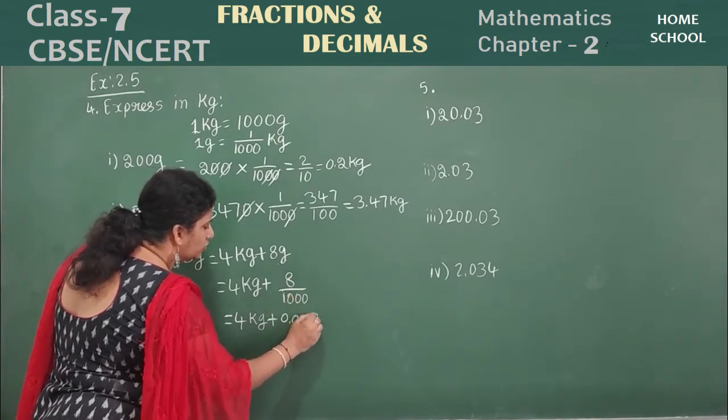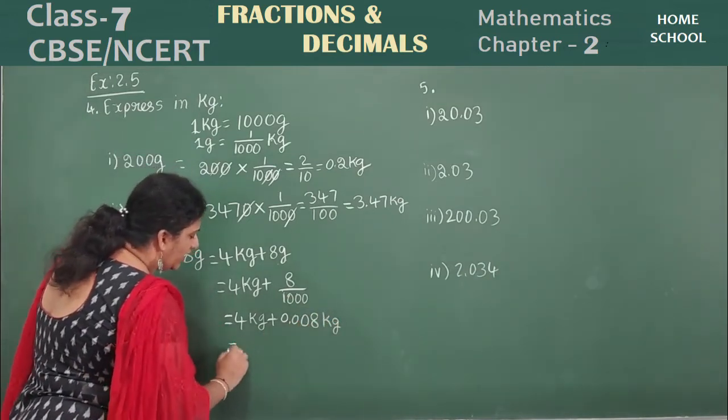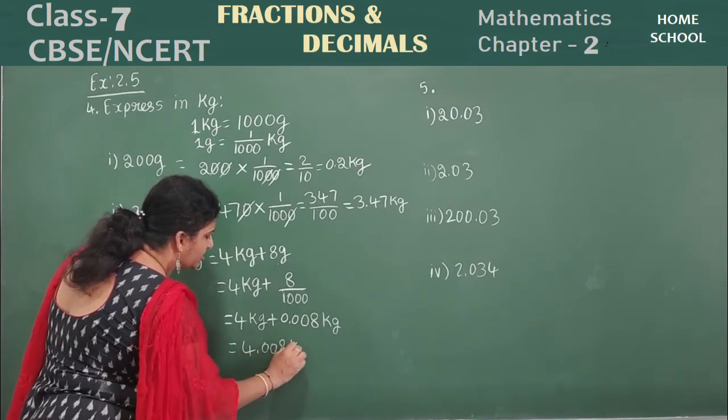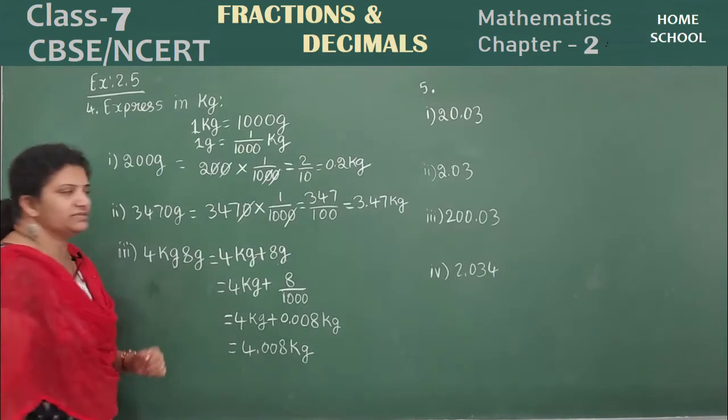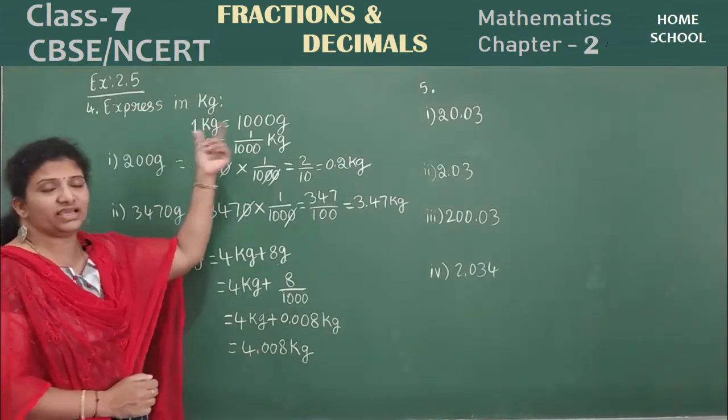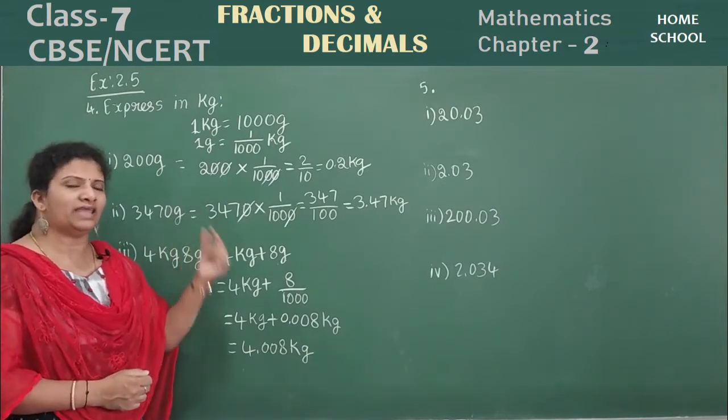After three values you need to put a decimal point. So that will be 4 kg plus 0.008. See, three values right? 1, 2, 3 kg. So now add these two. It will be 4.008 kg is your answer. Okay, this is the way we need to convert children. 1 kg, 1000 grams. 1 gram means 1 by 1000 kg.